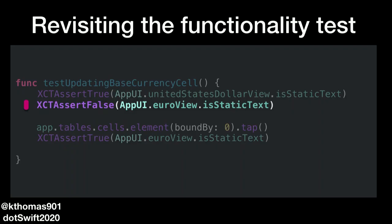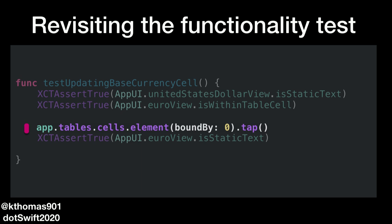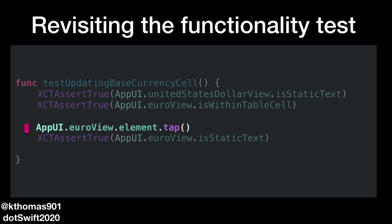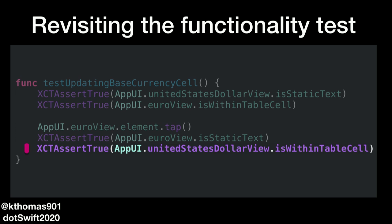Let's revisit this functionality test. Instead of asserting false, asserting true that euroView isWithinTableCell gives us a better signal for what we're testing. And instead of the unclear app.tables.cells.buttons query, we can now use our enum case to say AppUI.euroView.element.tap — it's really clear which specific element we're tapping on. Lastly, we can add another line to verify that after tapping euroView, the United States dollar view that was previously a label is now within our table.